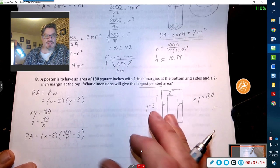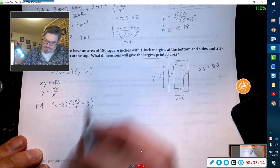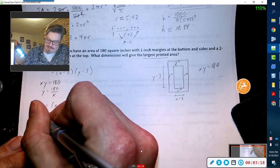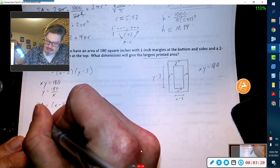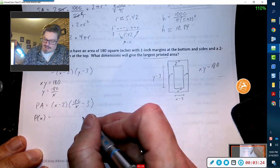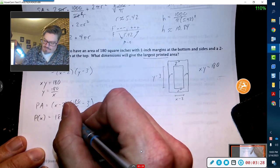x minus 2 times 180 over x minus 3. Now that is a function, we're actually going to multiply this out. We're going to call this P(x), and when I multiply this times this, the x's will cancel out, so I get 180.